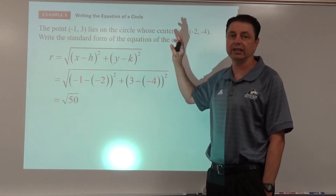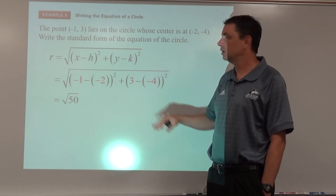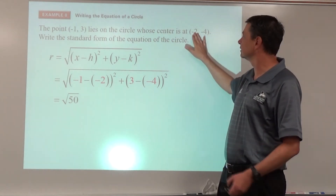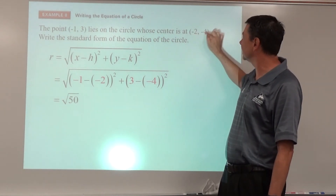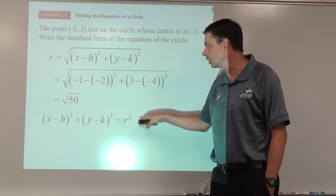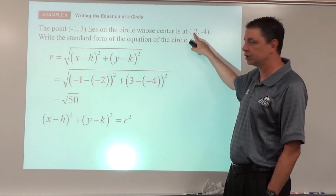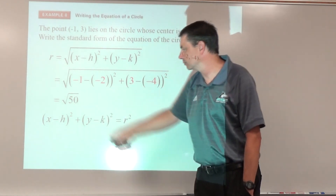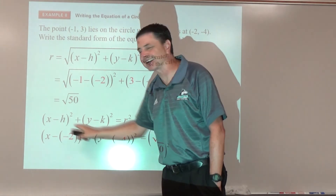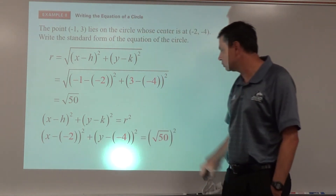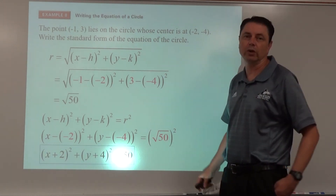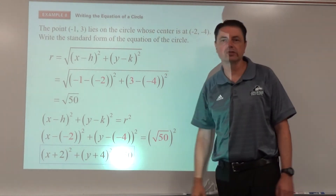We don't need to simplify √50 further because in the circle equation we square it. We substitute h, k, and r into (x - h)² + (y - k)² = r². Simplifying the signs without squaring those binomials, and squaring √50 gives 50. That is the equation of the circle with those characteristics.